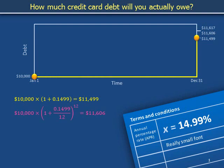Alternatively, one twelfth of your APR could be applied once every month. After tacking on a twelfth of 14.99% of interest to your debt at the end of each month, you have 12 copies of 100% plus one twelfth of 14.99% multiplied against $10,000, or $11,606.